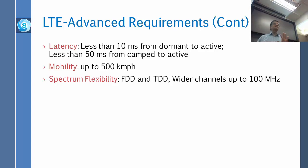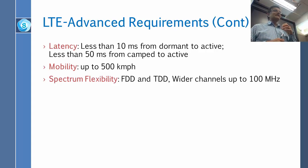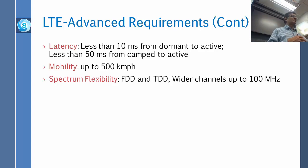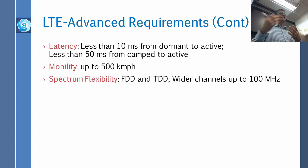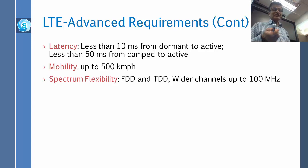Latency is measured in many different ways — how long it takes when you want to transmit a packet, when you want to make a connection, or just to get on the network. In LTE the frames are 1 millisecond, so if you are active and resources are available, you can transmit in the very next frame. The 10 ms and 50 ms figures refer specifically to getting on the network from a dormant or camped state.